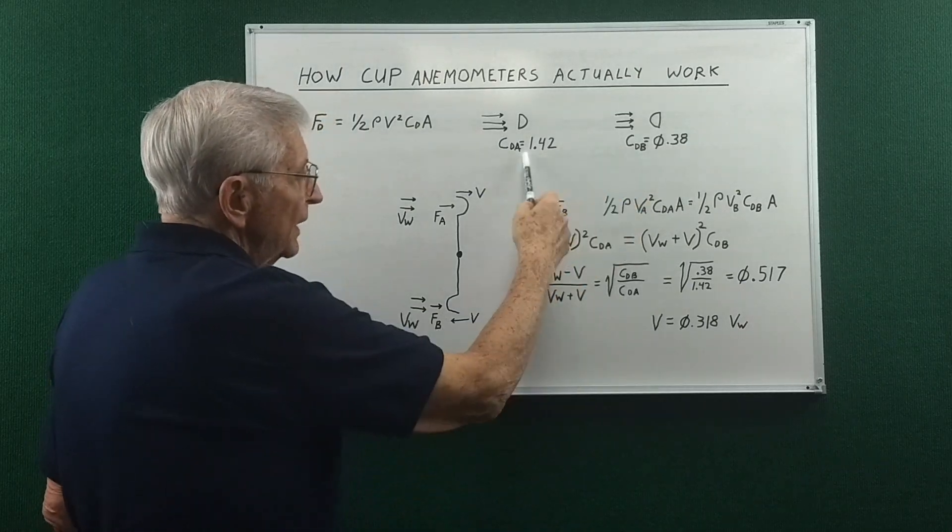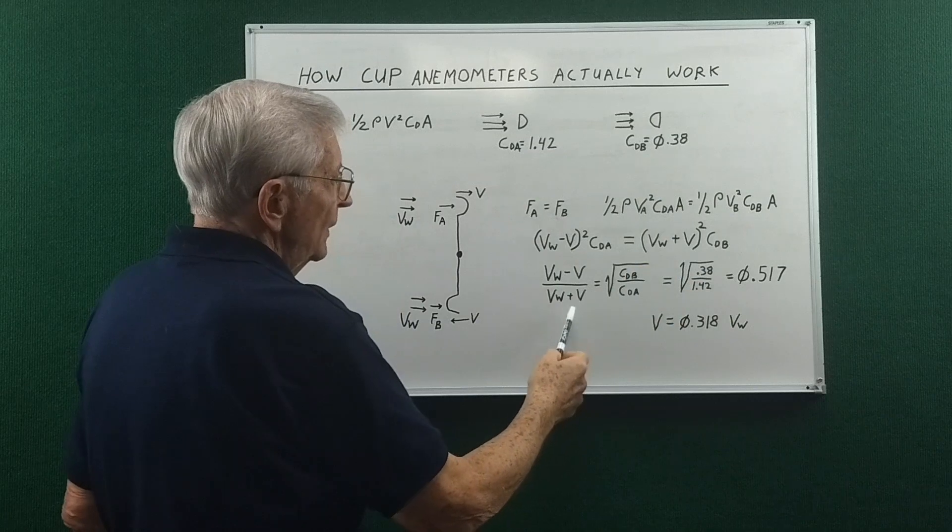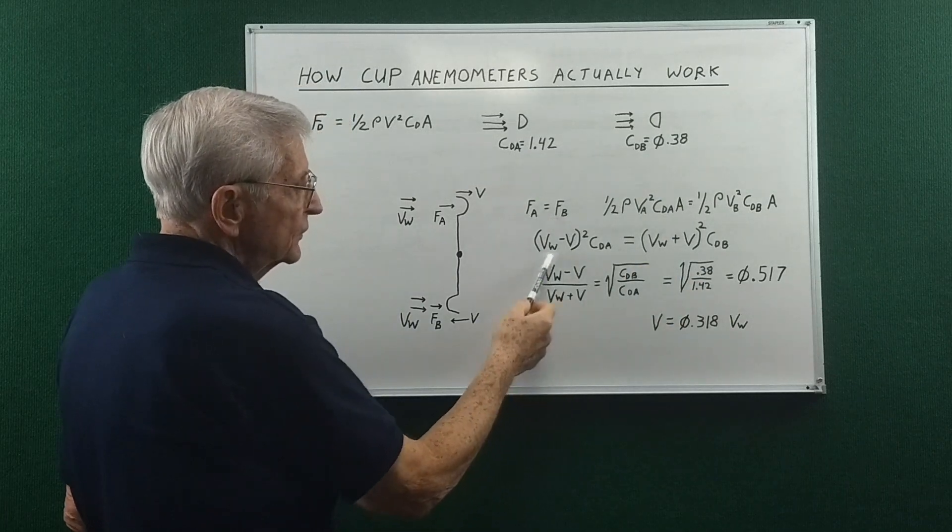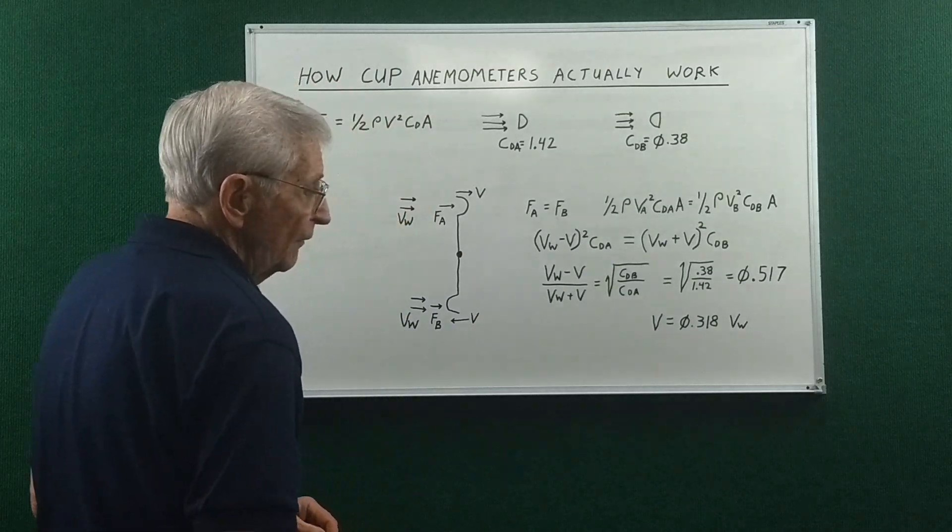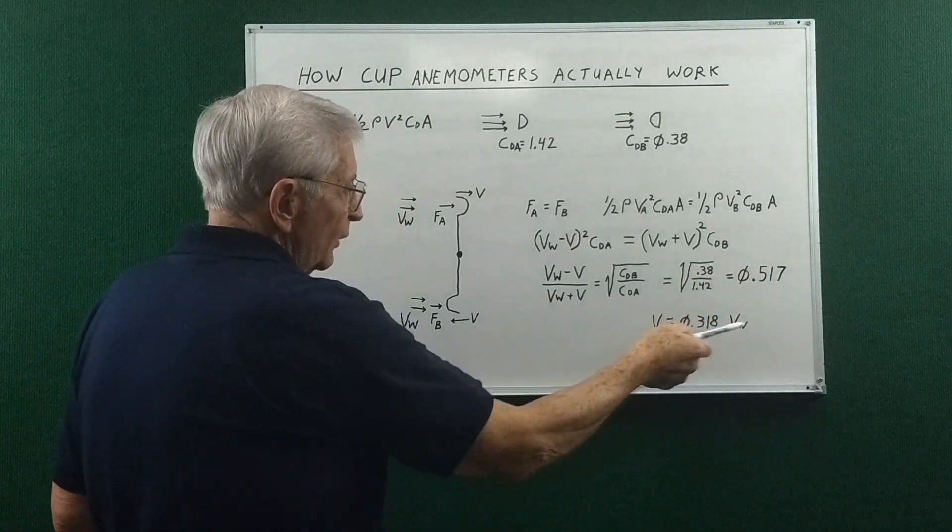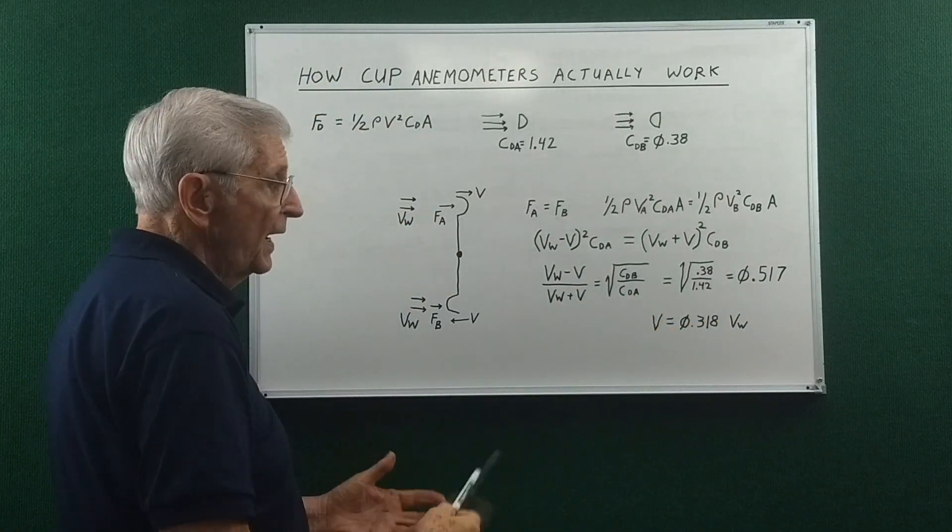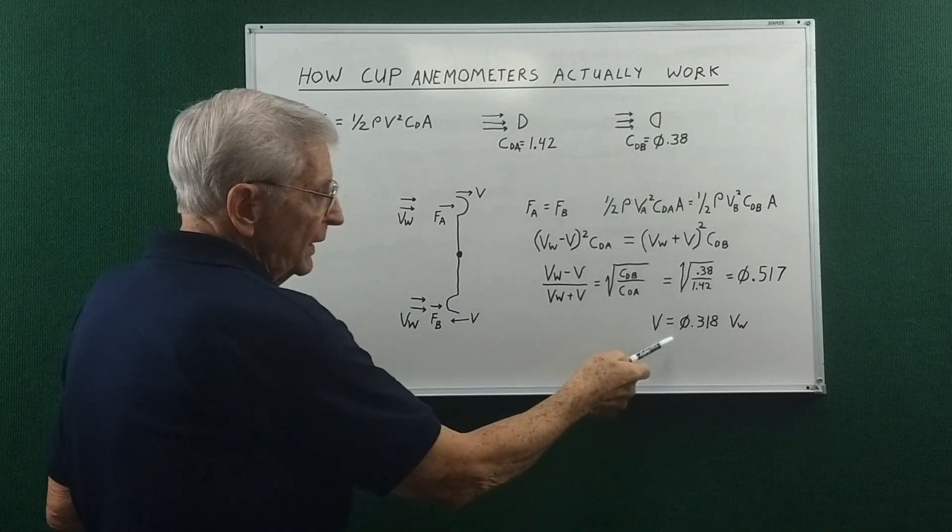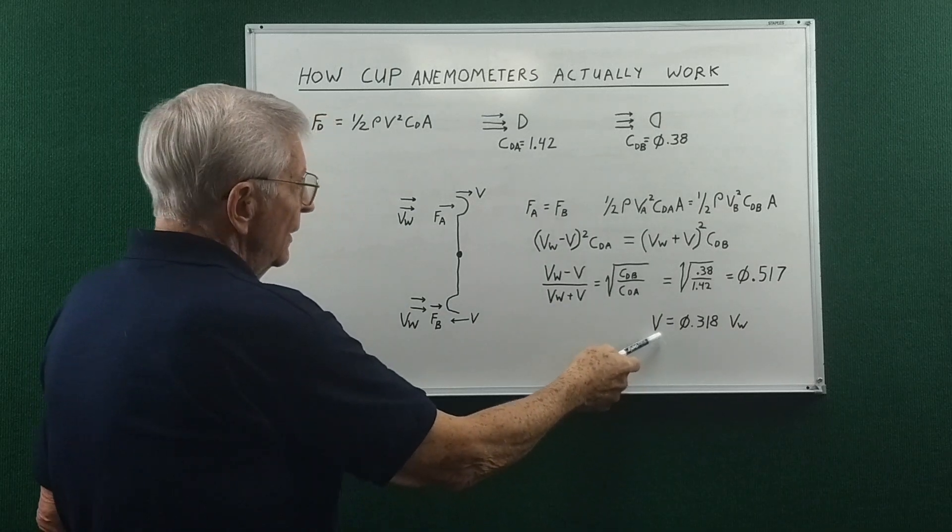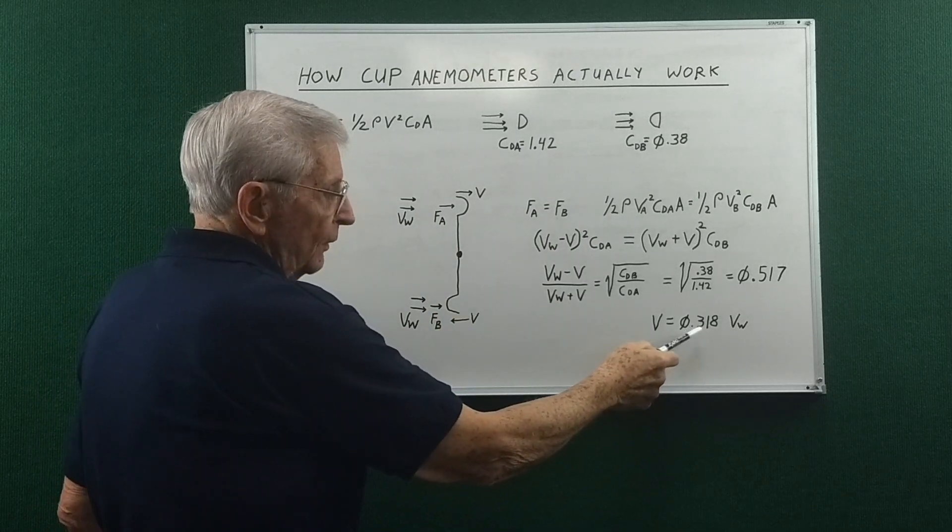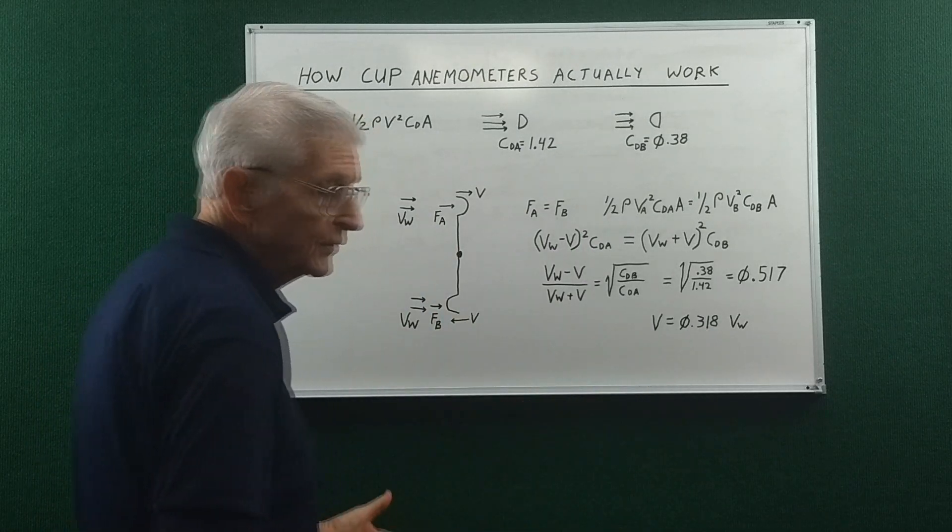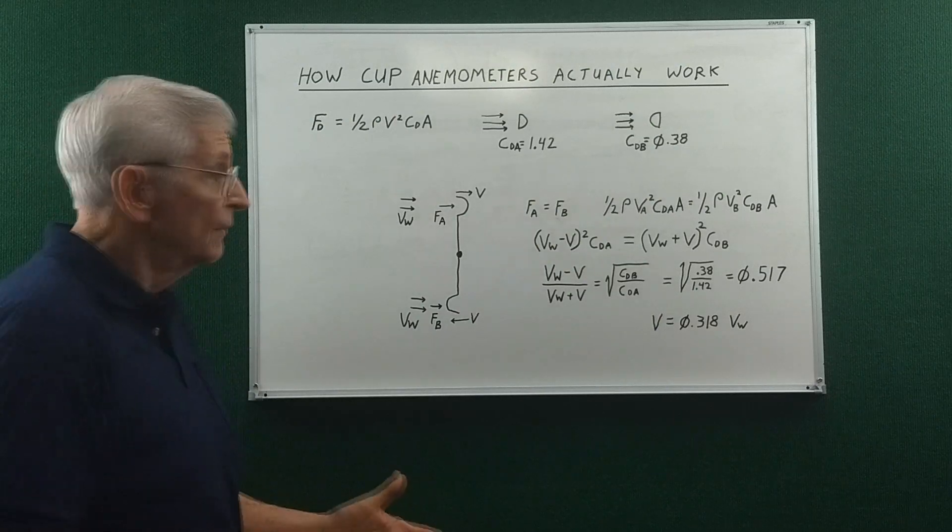And after we plug these numbers in, we end up with this term equal to 0.517. And then if we do our cross multiply and add and subtract, we end up with this number. But the velocity of the cup is only 31.8 percent the velocity of the wind.